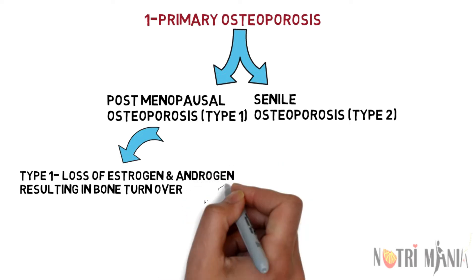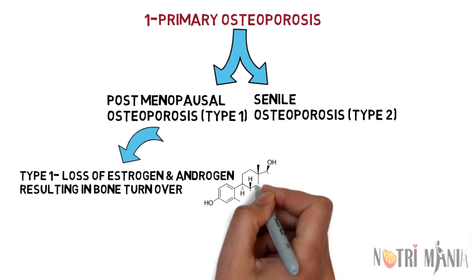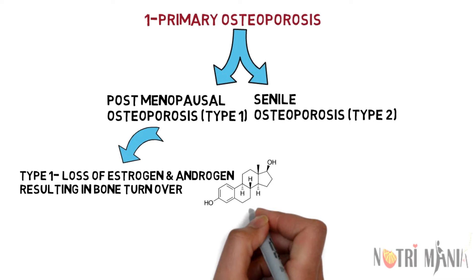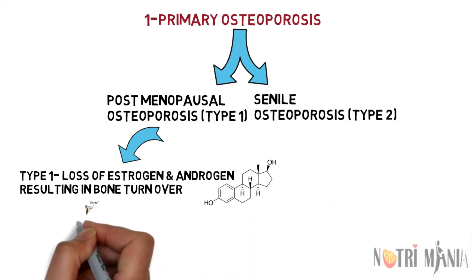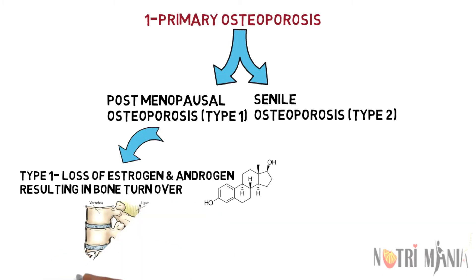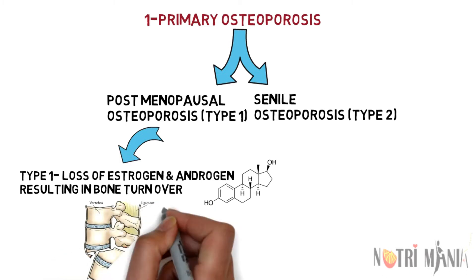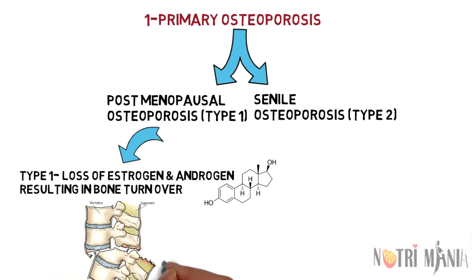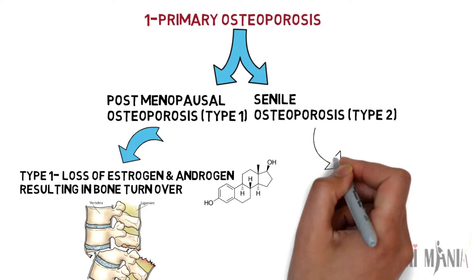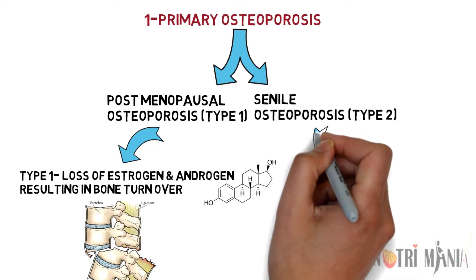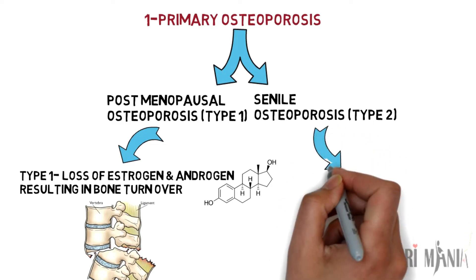People who suffer from this type of osteoporosis are also at risk of spinal and wrist fractures. This is mainly because of the loss of bone structure and reduction in the amount of trabecular bone present in the vertebral bodies of the spine and in the ends of the long bones, like your wrist. Senile osteoporosis Type 2 represents the gradual age-related bone loss found in both sexes.